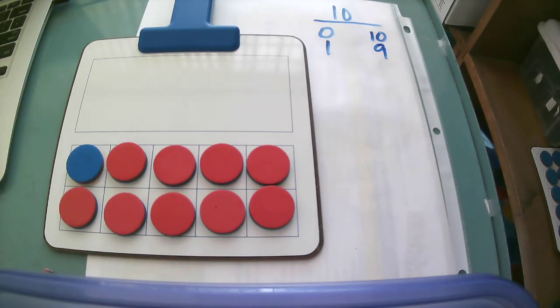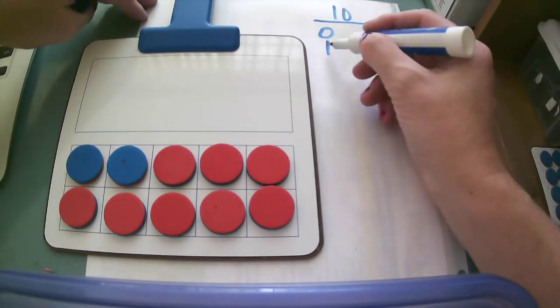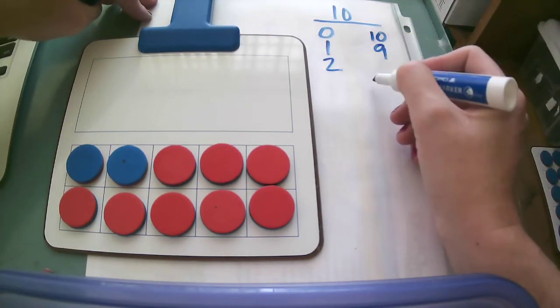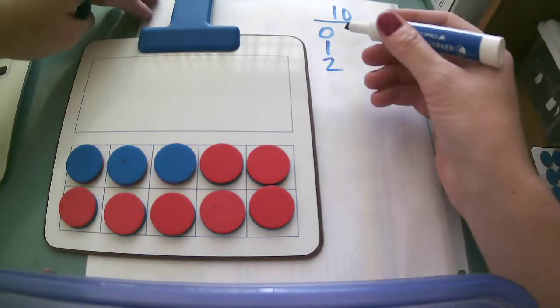I'm gonna continue my pattern here and now I have two blue and eight red, so I know that two and eight are number partners for the number 10.